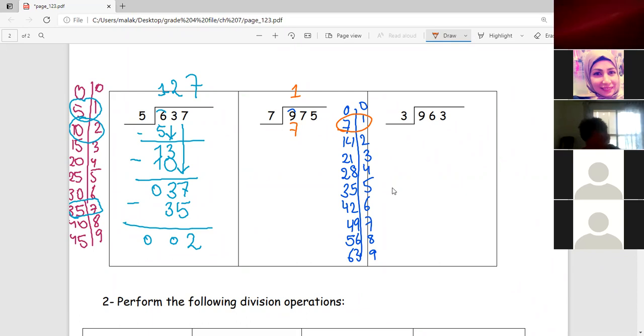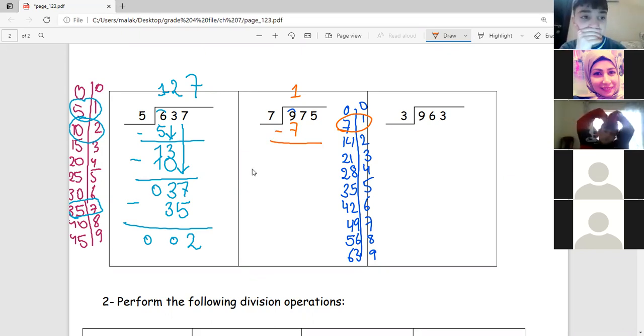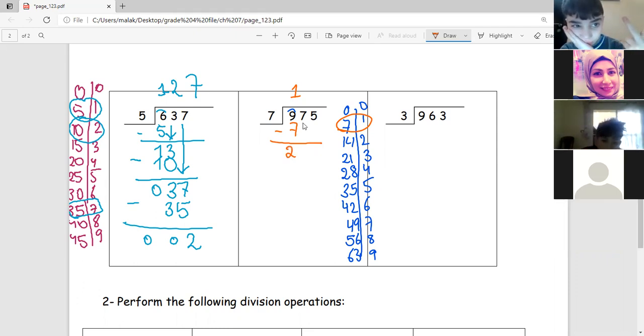Yes, we minus. We subtract both numbers, nine minus seven. Two, two, okay. Then what shall I do?